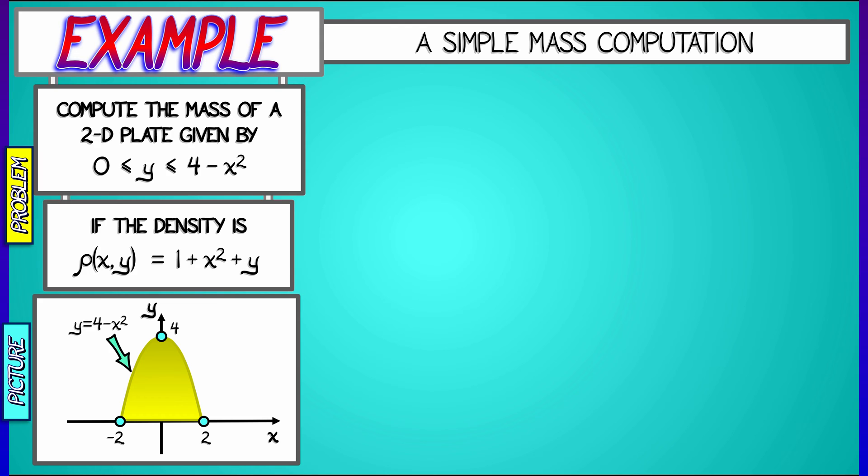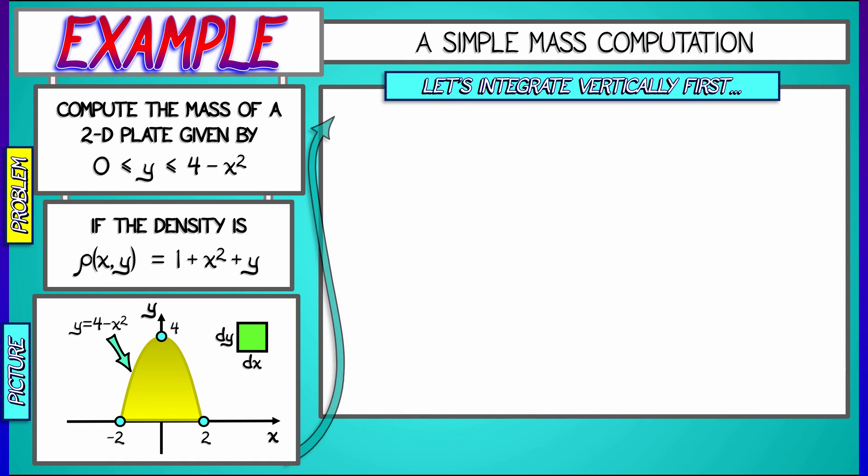Now, which way do we want to integrate this? The area element in this case is an infinitesimal rectangle with dimensions dx and dy. I don't know. Let's integrate vertically first. The mass element, dm, is the density 1 plus x squared plus y times dy dx. That means we'll be integrating vertically first.